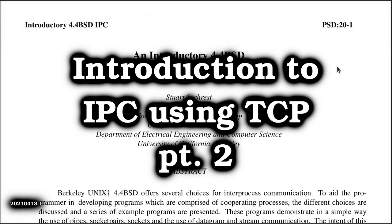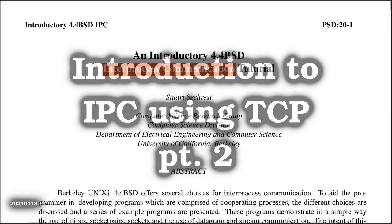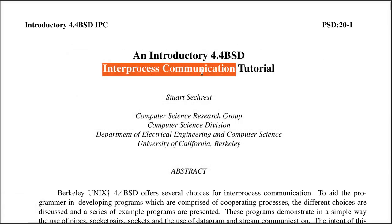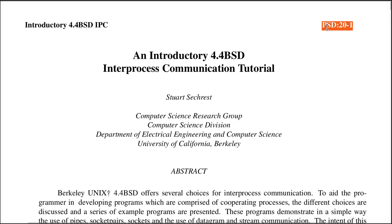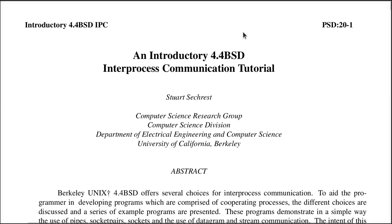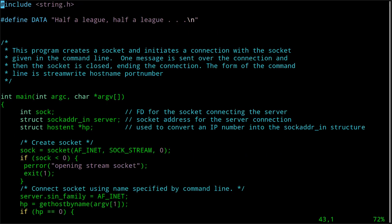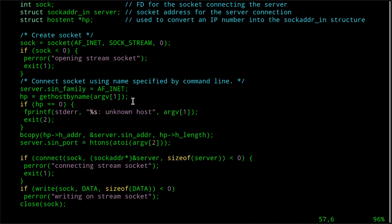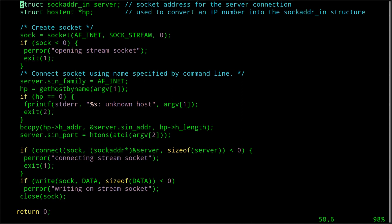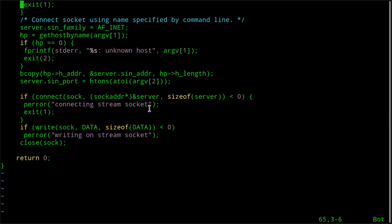Hey, John here. Welcome to the second half of a discussion on how to perform interprocess communications using the Berkeley socket API, as discussed in programmer supplementary documents chapter 20 in the BSD 4.4 Lite software distribution. Links are below this video. This is the client software example that I ported to run on Linux — there are some cosmetic differences and minor header file changes, which I discussed in part one.